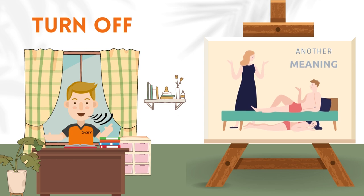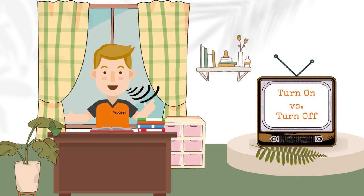Another example: after she betrayed me, she really turned me off, so I don't want to talk to her anymore. The big difference between turn on and turn off is that when we talk about turn on, you get angry and you show your anger by attacking someone physically or verbally. But when it comes to turn off, you might also get angry, but you want to stay away from the one who bothers you.